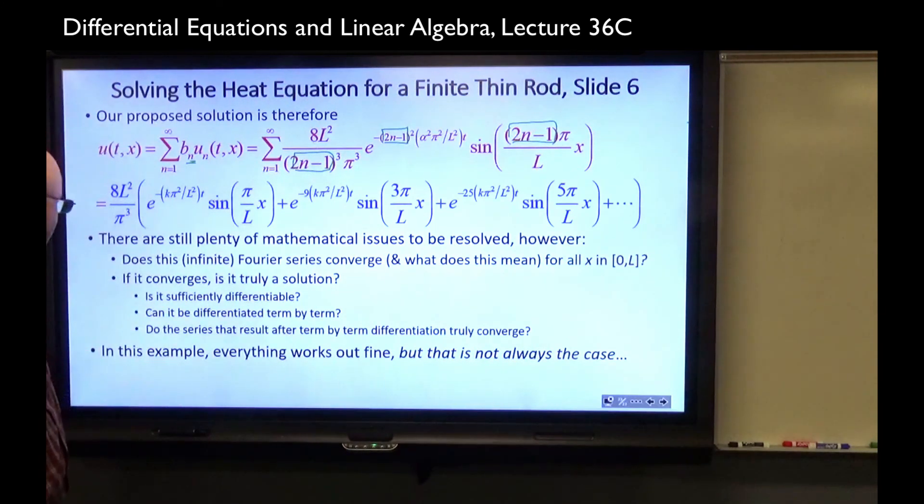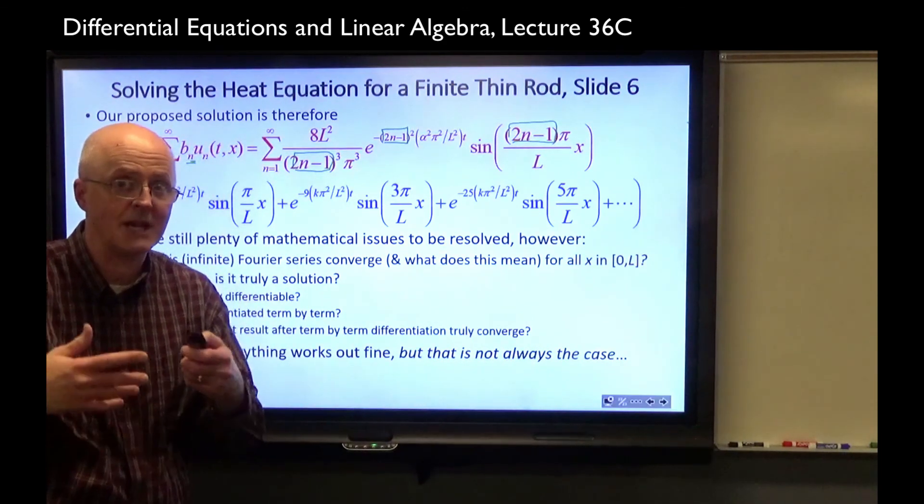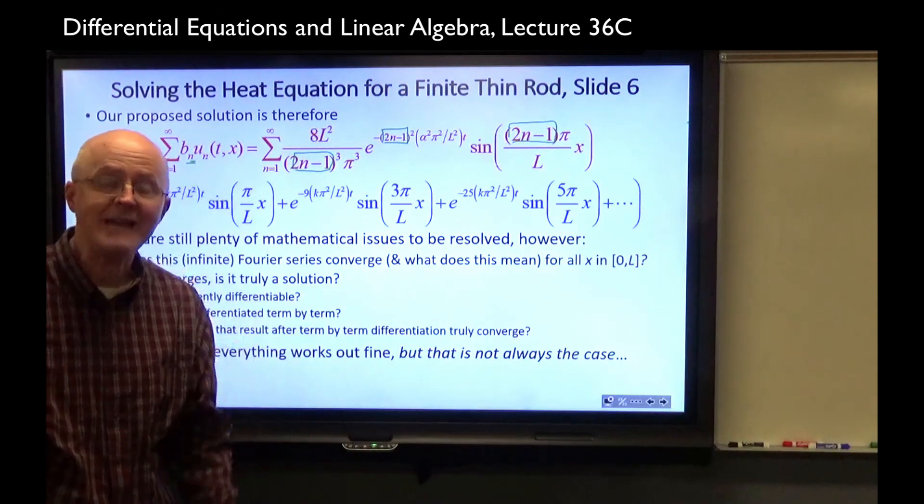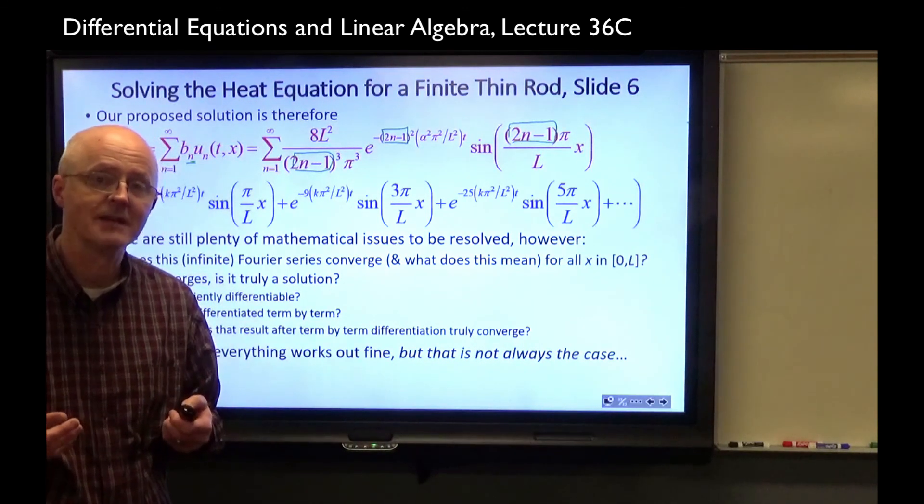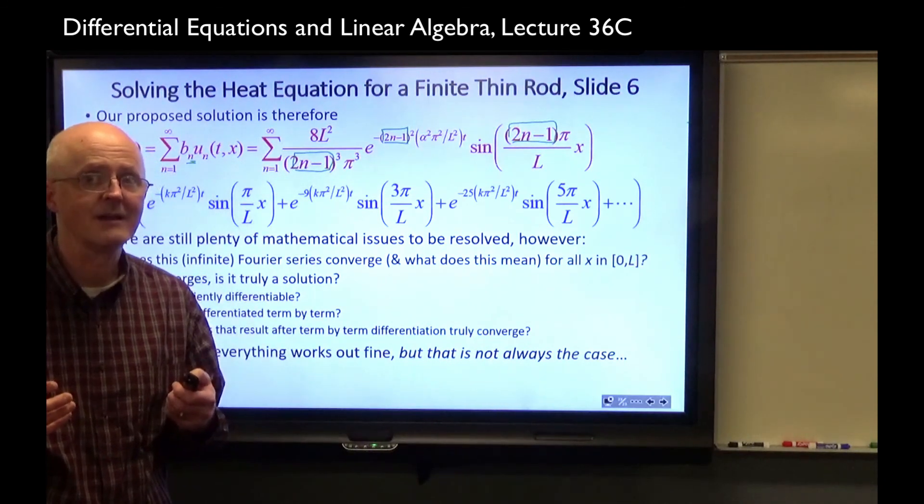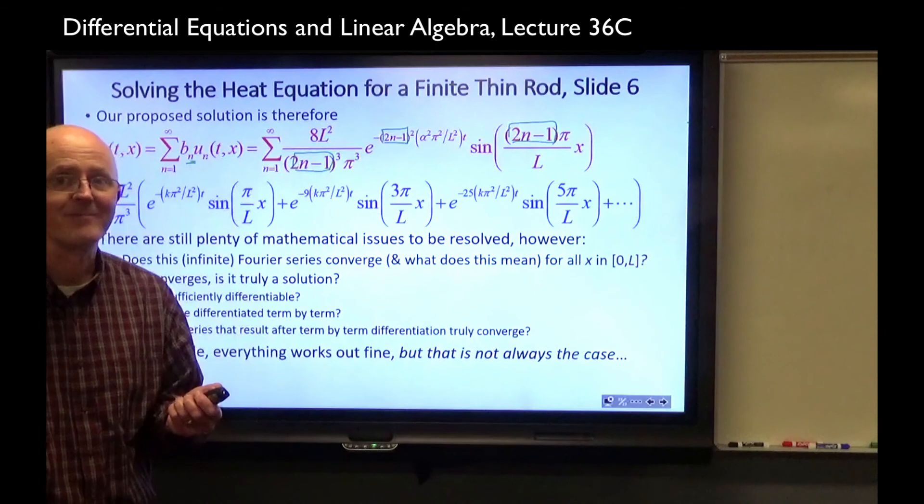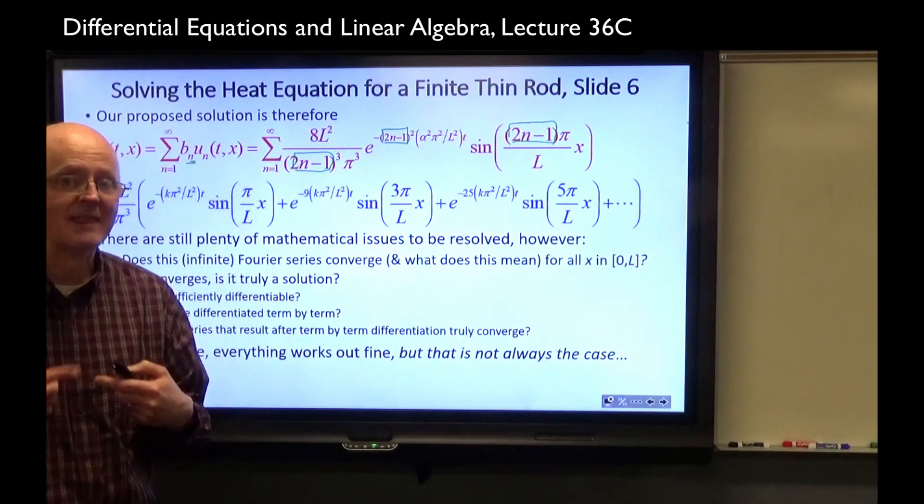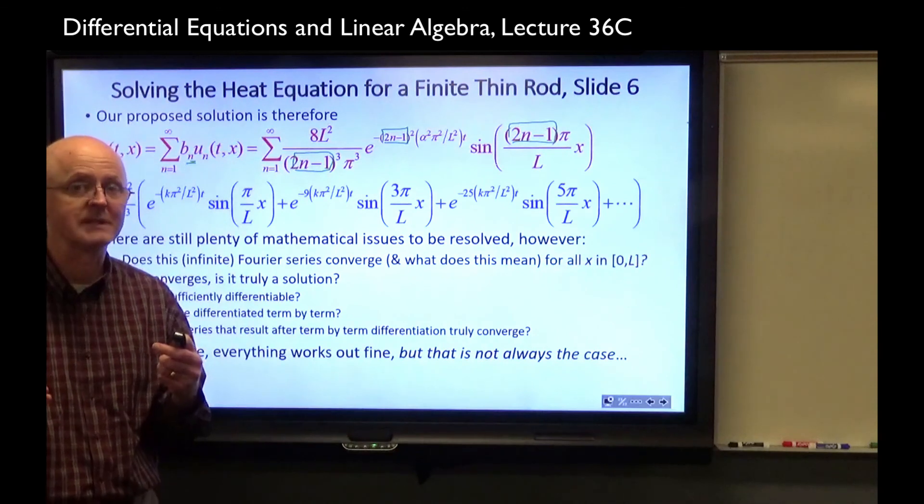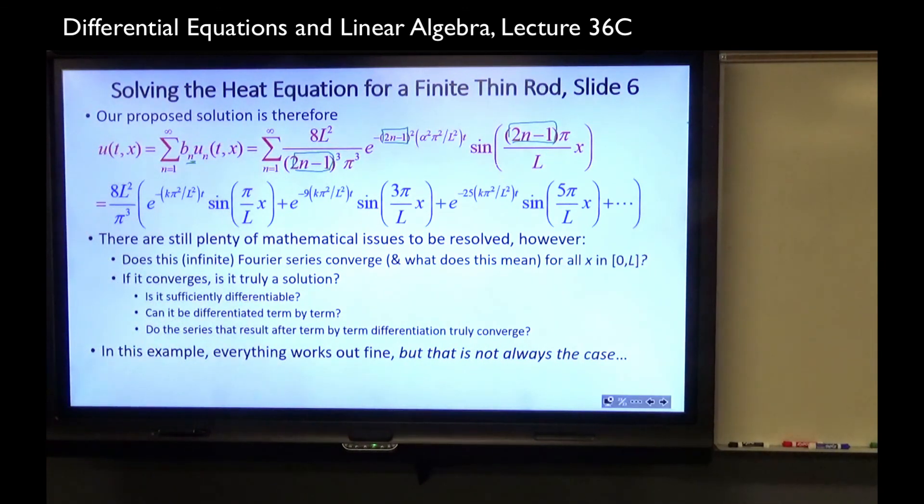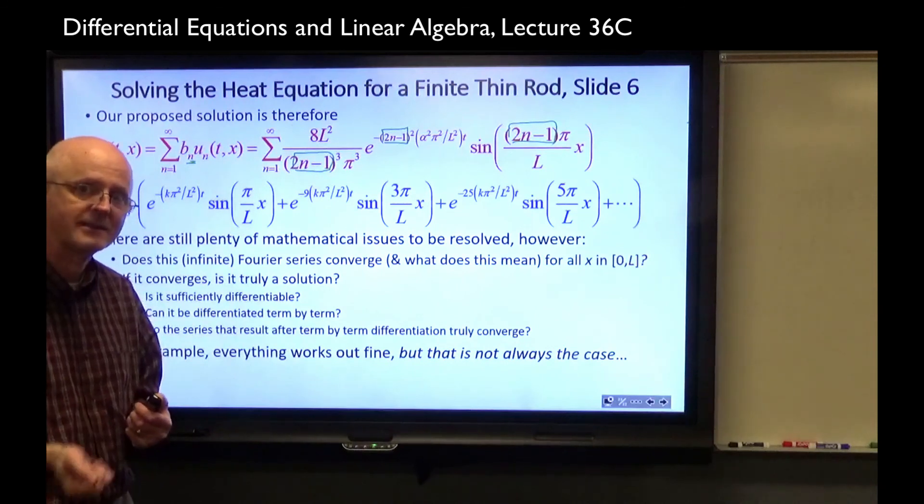You'd have to know if it's sufficiently differentiable, once differentiable with respect to t and twice differentiable with respect to x. You might hope, can you differentiate it term by term and get new infinite series for those partial derivatives? Do the series that result after you differentiate term by term truly converge, and to the appropriate derivatives? In this example, it turns out everything works out fine, but that is not always the case. There are cases where it does not work out fine. Things go wrong. And in fact, the fact that things go wrong sometimes, which was discovered by Fourier, especially when he shared his work with others, caused a crisis in mathematics.